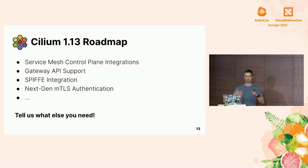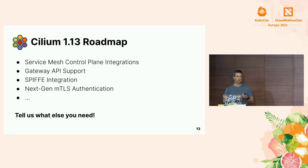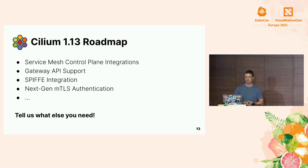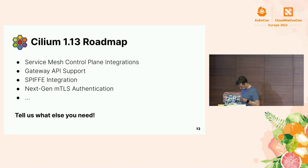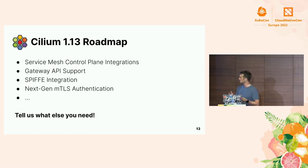Looking at what's coming in 1.13: we're about to release 1.12, which moves service mesh out of beta into stable. In 1.13, we will focus heavily on additional service mesh control plane integrations. Gateway API support will be coming, SPIFFE integration — the PR is out there — we want to merge that in time for 1.13, as well as a new architecture for mutual authentication with mTLS that will work not only for TCP but for all variety of network traffic. Tell us what's missing, and Liz will speak about how you can influence the roadmap. I'd like to introduce Laurent from Datadog, talking about Datadog's journey with Cilium.